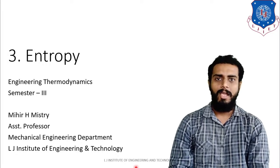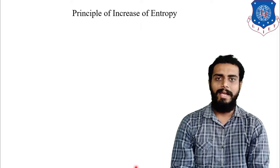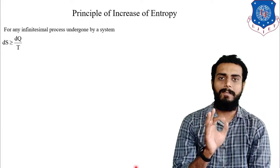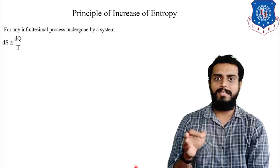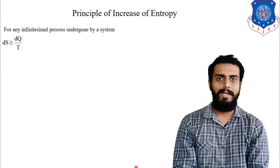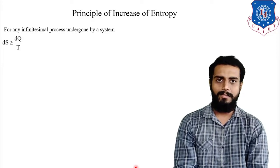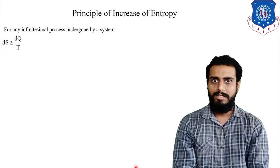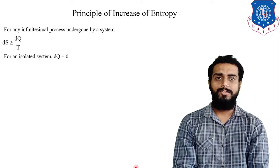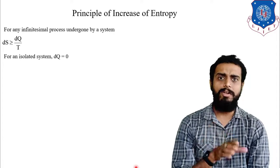Let us understand the formula. For any process having an infinitesimally small change, you can write that dS will be greater than or equal to dQ by T. When the greater than or equal to sign is written, there is the possibility of a reversible as well as an irreversible process — that is the generalized mathematical equation. Now if an isolated system is considered — and you are very well aware of the meaning of an isolated system — the heat transfer as well as mass transfer will be zero. So if an isolated system is considered, heat transfer is equivalent to zero, meaning dQ equals zero.